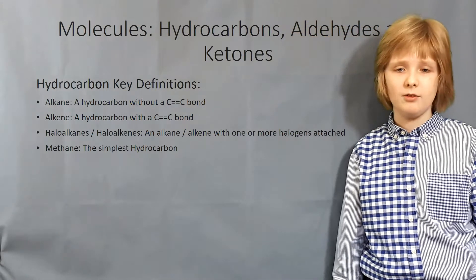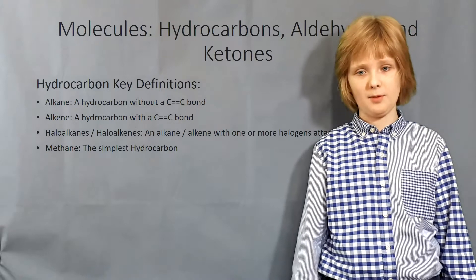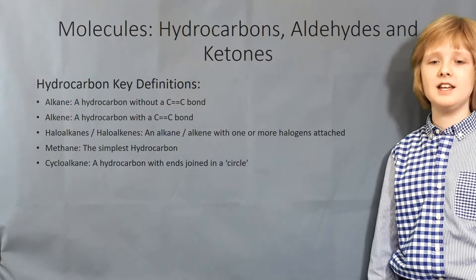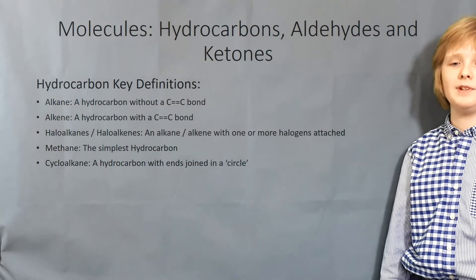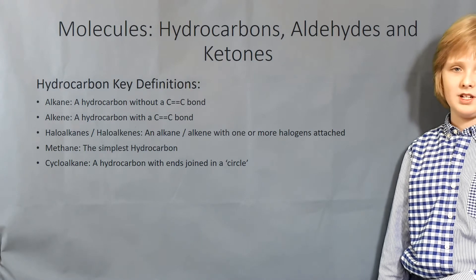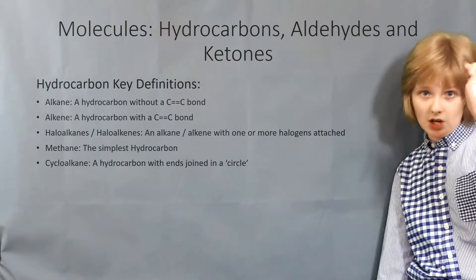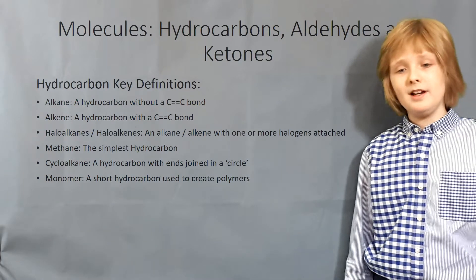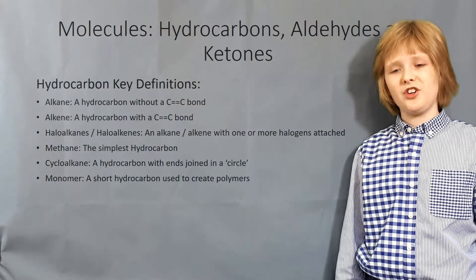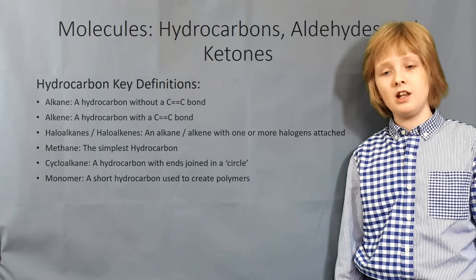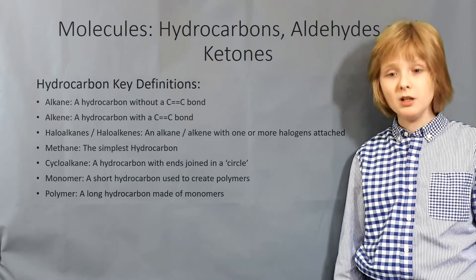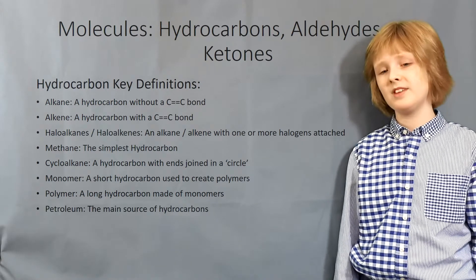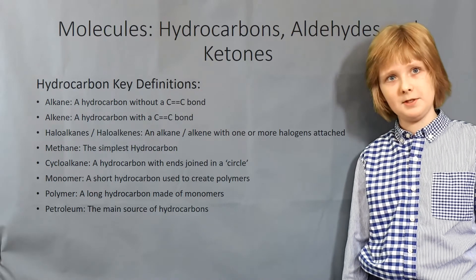Methane is the simplest hydrocarbon. A cycloalkane is a hydrocarbon with ends joined in a circle. A monomer is a short hydrocarbon used to create long polymers. Petroleum is the main source of hydrocarbons.